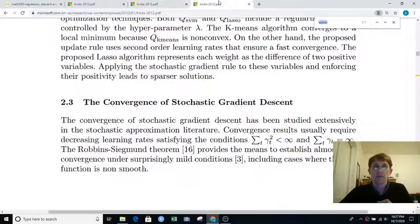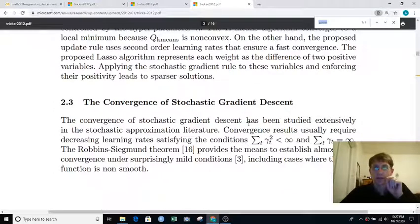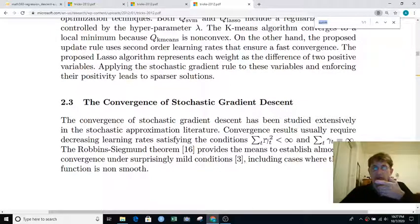Let me show the part where he talks about—here he's using gamma instead of alpha for learning rates and t is like the iteration number. Iteration number 1, 2, 3, etc. So he's saying let's have the sum of the learning rates at each iteration be infinity, but the sum of the squares of them be less than infinity.